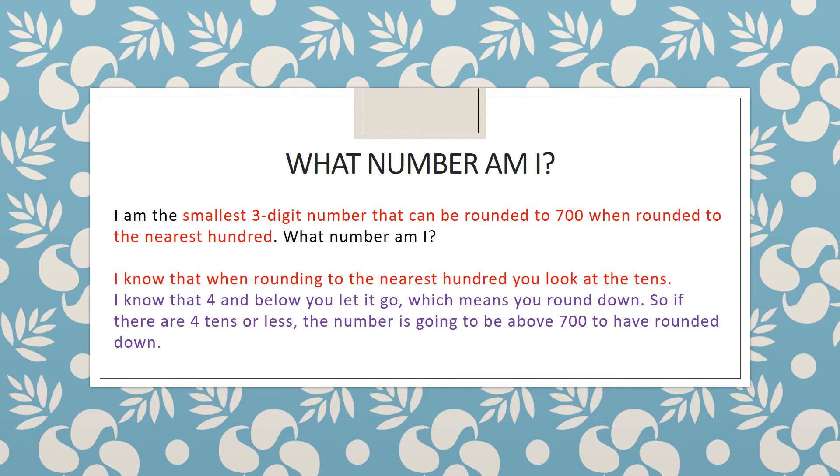So if there are four tens or less than four tens the number is going to be above 700 because it's rounded down to 700.